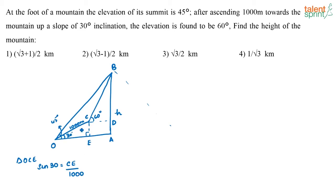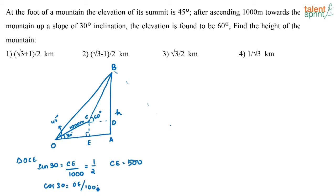OC is 1000, so sine 30 equals CE by 1000, which equals 1/2. Therefore CE equals 1000/2 = 500. Similarly, in the same triangle, cos 30 equals OE by OC, that is OE by 1000. Since cos 30 is √3/2, OE equals 500√3.